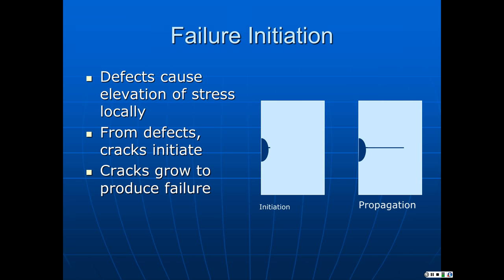Failure always has two stages. Failure is going to initiate, usually at a defect — a surface crack or scratch, an occlusion, a stacking fault, or a grain boundary flaw. Something local is going to initiate a crack, and then that crack is going to propagate. When we try to prevent failure, we can attack the failure process at either of these stages: we can either try to prevent formation of cracks, or we can prevent cracks from growing once they form. Both approaches are appropriate.